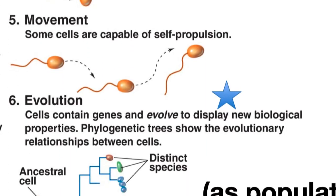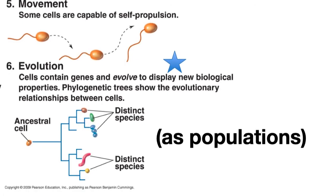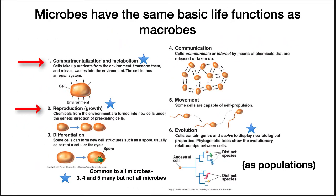Number five, many living things are capable of movement, and microorganisms are no exception. Number six, living things evolve. Microorganisms will accumulate mutations over time and change, just like any other organism. Traits one, two, and six are common to all living things. Three, four, and five are present in many, but not all, microorganisms.